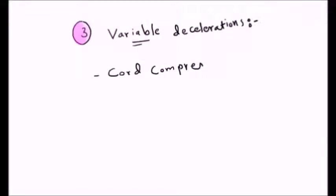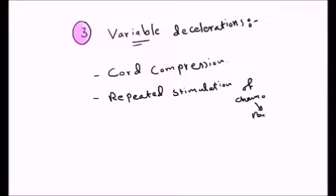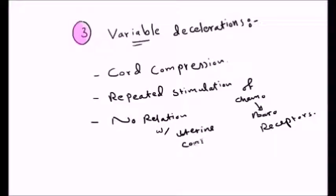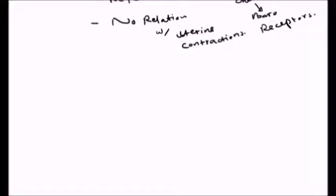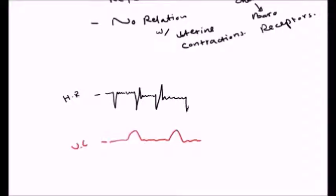The last type is variable deceleration — it's the most severe one. It is caused by cord compression. There is repeated stimulation of the chemo- and baroreceptors with no nutrients or oxygen reaching the fetus, making it more severe than the causes of late deceleration. On the paper, there will be no relation between the uterine contractions and the deceleration — the deceleration can occur at any time, before or after contractions.